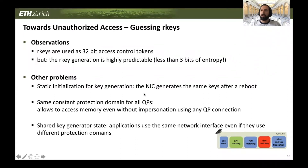For unauthorized memory access, we need to guess R-keys to bypass R-key matching and virtual address translation. R-keys are 32-bit access control tokens, but their generation is highly predictable — in all cases we analyzed, it was less than three bits of entropy. For some devices, like Broadcom, they even used a fixed increment between subsequent key generation values. We also found that some NICs had static state and generated the same keys even after rebooting the server, and there was shared state between multiple applications using the same NIC.